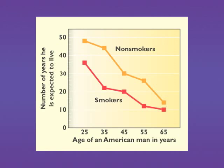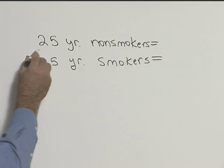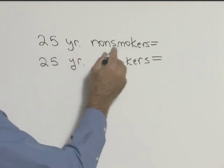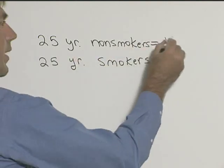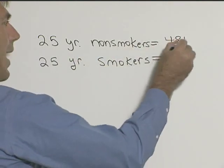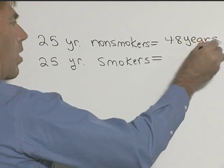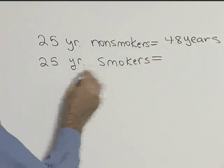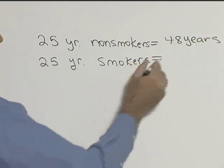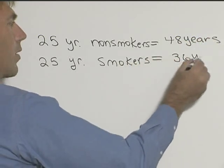If you now look at a 25-year-old smoker, that's our bottom graph, that will be 36 years. So let's now take that information and put it on the board. A 25-year-old non-smoker lived 48 years, while the 25-year-old smoker was 36 years.